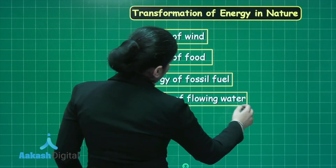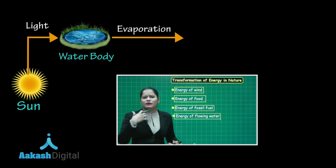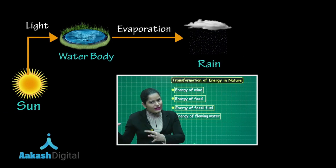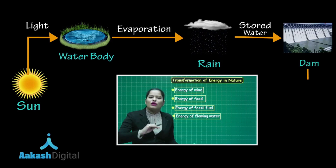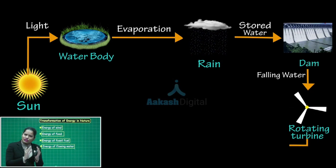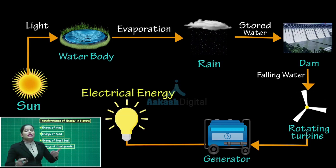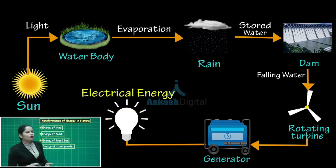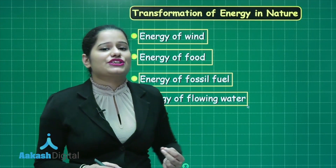Moving on to energy from water. Due to the sun's heat, water evaporates from rivers and lakes, contributing to the formation of clouds. When it rains, that water gets stored in dams. When the stored water is allowed to fall on turbines, the turbines rotate, and that turbine is connected to the shaft of a generator to produce electricity. Here again you have seen how solar energy plays a very important role in contributing to the energy of flowing water and how transformation of energy in nature occurs.